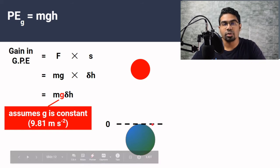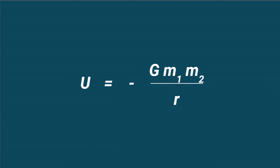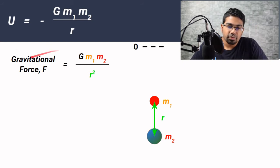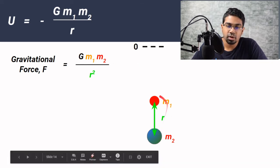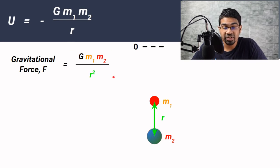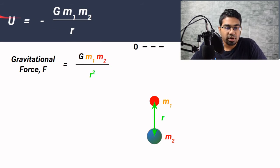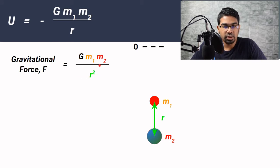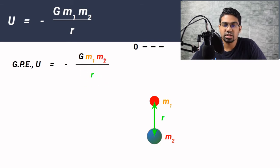This is where our next formula comes in. The formula for gravity according to Newton's universal law of gravitation is F equals GMm over r squared, where the two m's represent the masses of the two bodies and r is the distance between their centers. Our formula for gravitational potential energy is very similar: negative GMm over r. The only differences are the negative sign in front and r in the denominator instead of r squared.